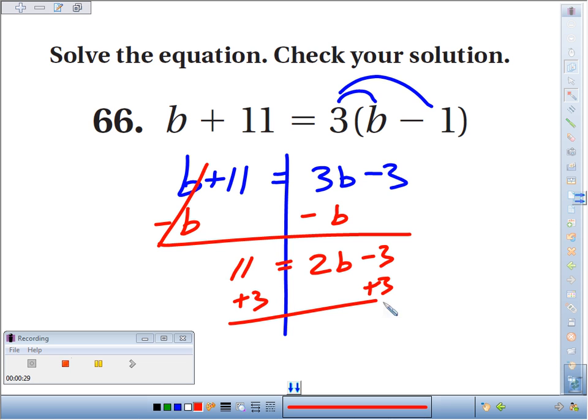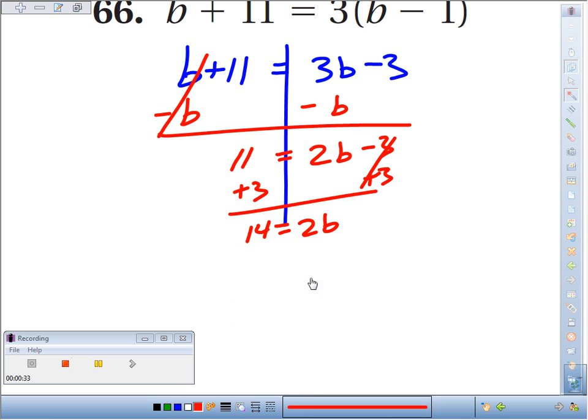We'll add 3. They cancel. We get 14 equals 2b. And our last step, to cancel out the times 2, we'll divide by 2, and we get b equals 7.